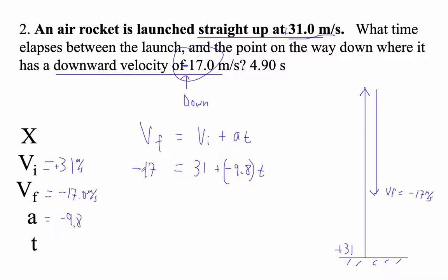So the first thing I'm going to do is subtract 31 from both sides because you've got to get this term by itself. So negative 17 minus 31 is negative 48 equals negative 9.8 t. And then I'm going to divide both sides by negative 9.8.